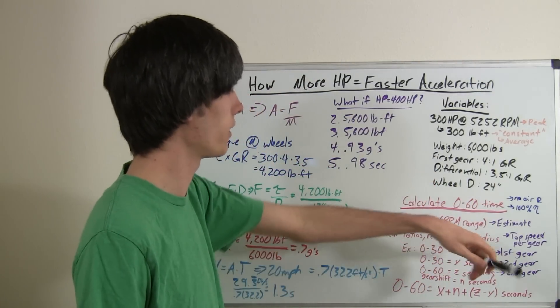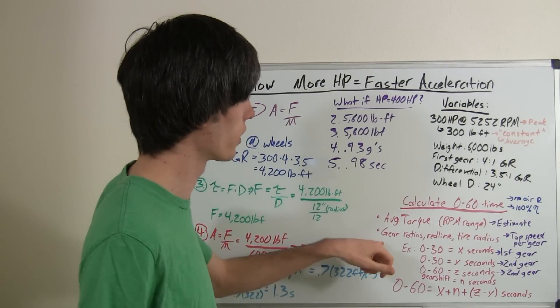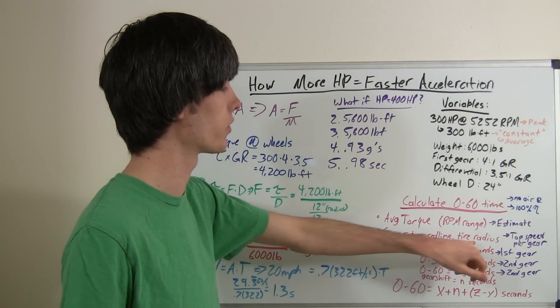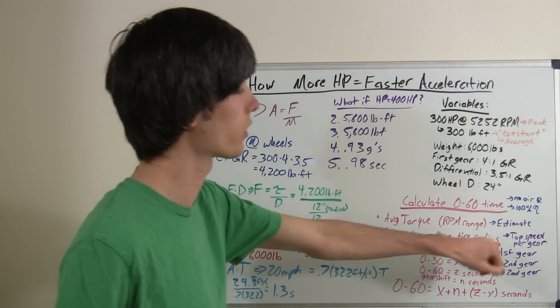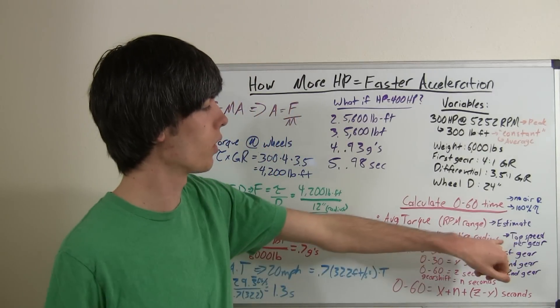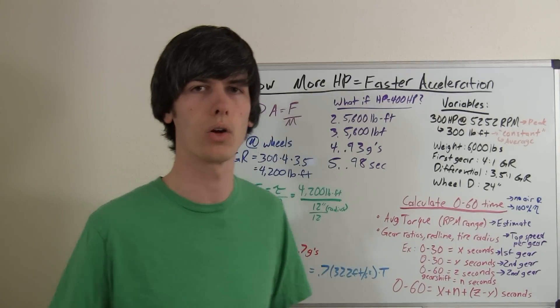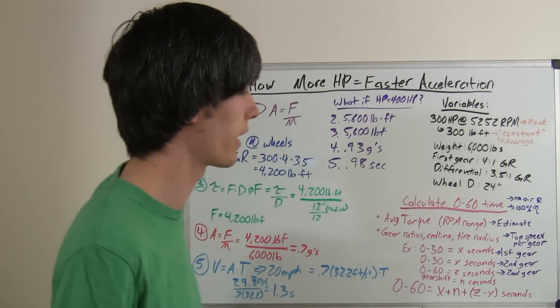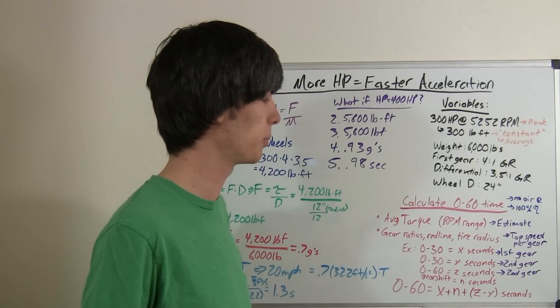So, you get that, or estimate it, and then you're going to need your gear ratios, your red line, and your tire radius, and you can calculate with that your top speed per gear. So, if you don't really understand how to do that, I've got a video called Car Gears. You can check that out, and it'll explain how to get the top speed per gear.